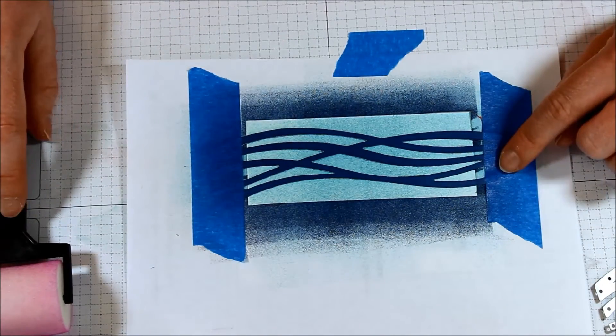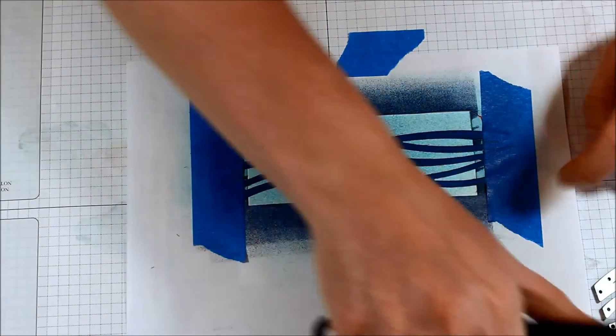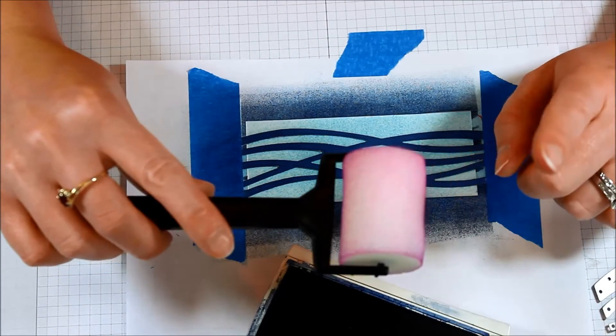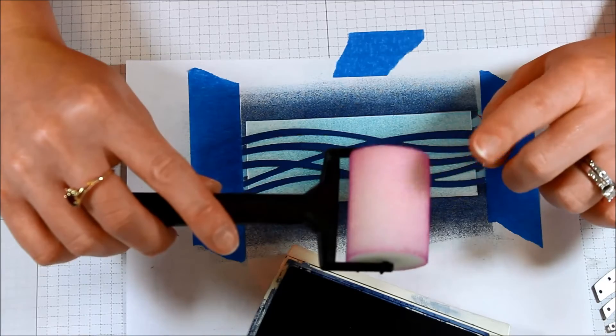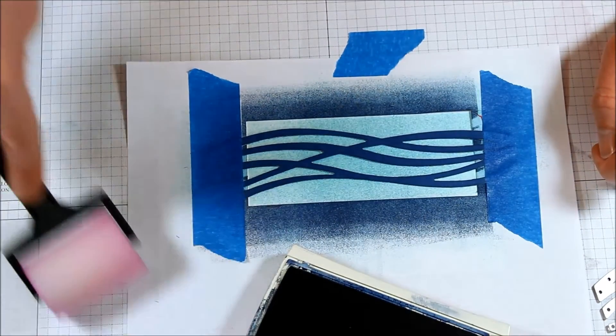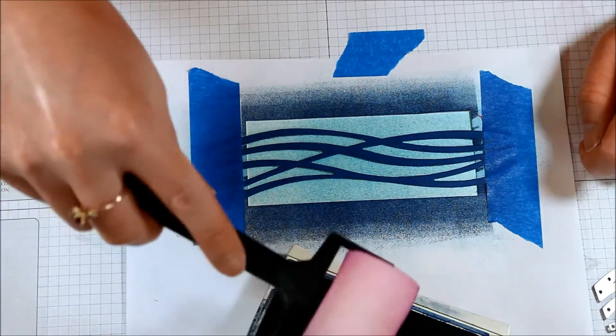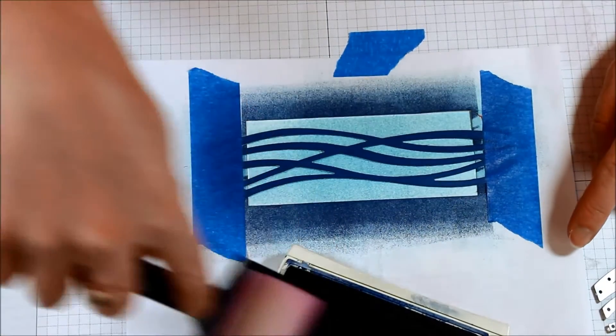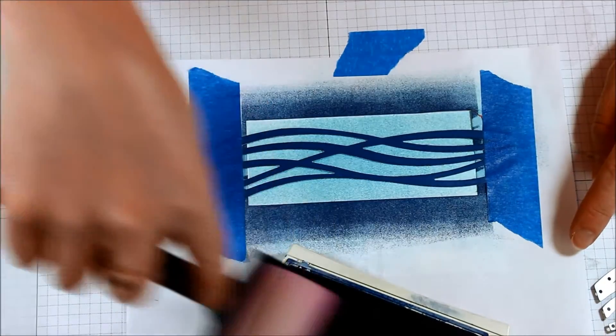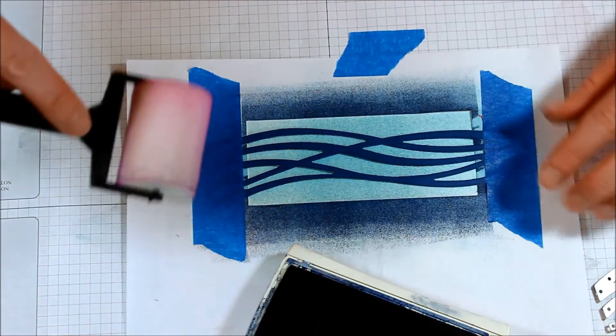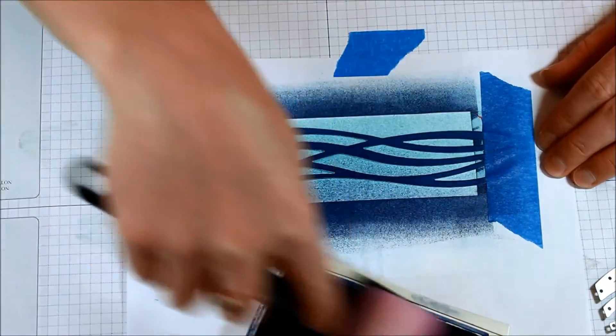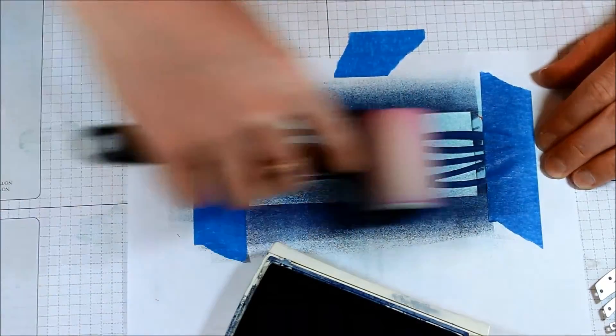But now what we're going to do is we're going to then take our Night of Navy ink. Since I'm just using this for one card, I'm going to use the same sponge brayer because most of the ink has come off of it from the Marina Mist so I'm not going to mess up my Night of Navy. And I went with a darker color as my second color so you don't have to worry about it bleeding through or anything.